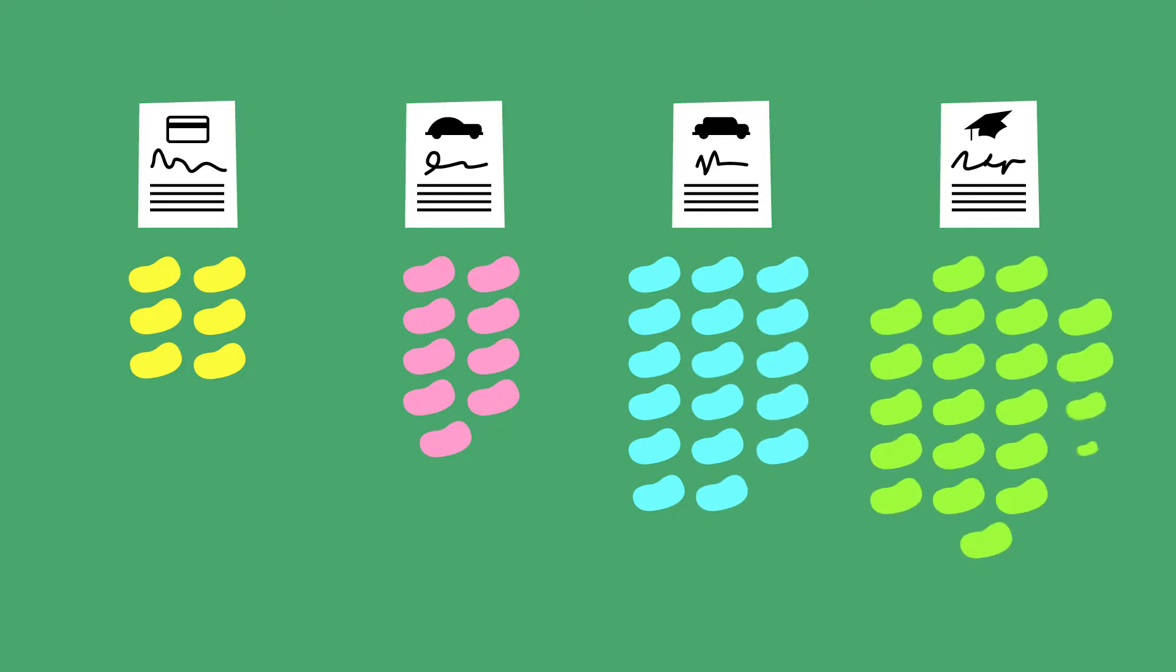They figured out they can put a total of a thousand each month toward paying off debt. That's like being allowed to eat five jelly beans at a time. But which should they eat first?